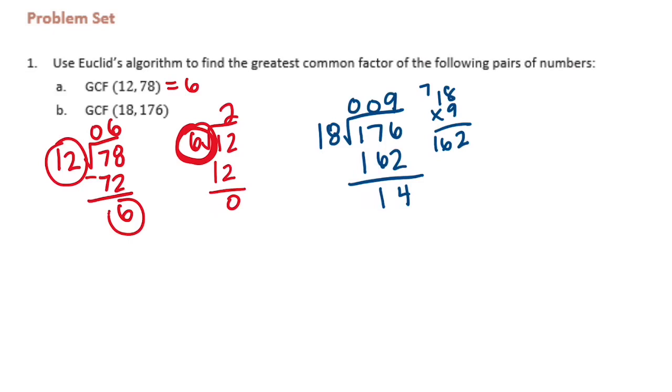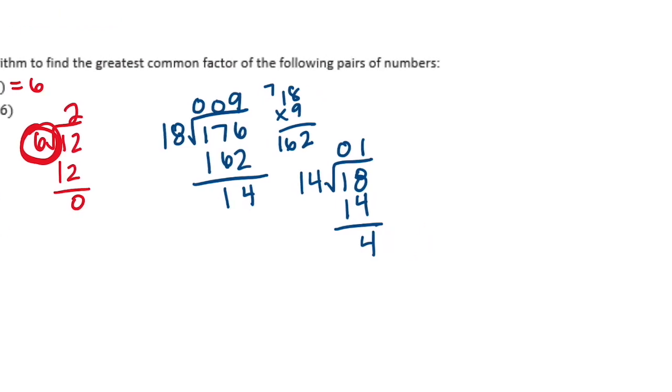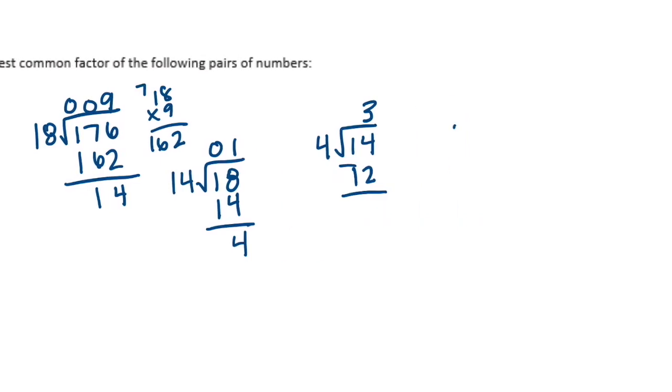So let's do 14 divided by 18. 14 goes into 18 once. Sorry, this should be 14. We have a 4 remainder, so now we're going to keep going. 4 into 14. 4 goes into 14, 3 times, that's 12. Still not done, so how many times can 2 go into 4? No remainder, so their greatest common factor is 2.